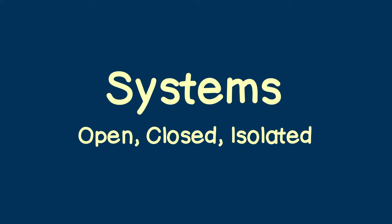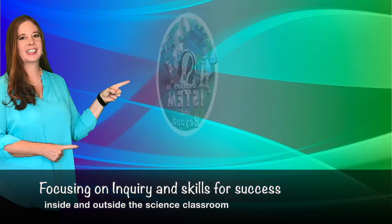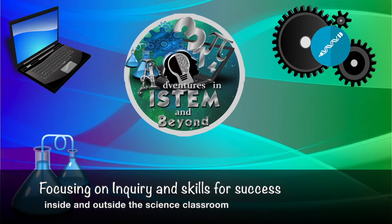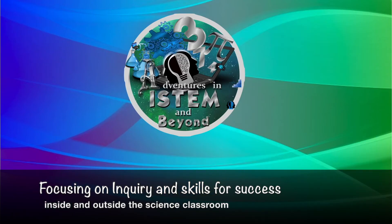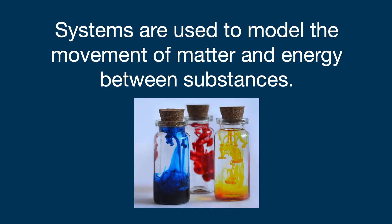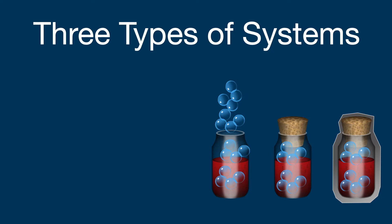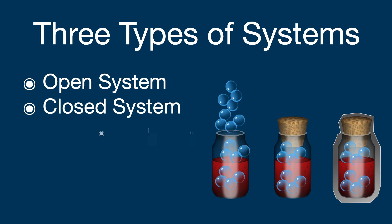Systems. Open, closed, isolated. Systems are used to model the movement of matter and energy between substances. There are three types of systems. Open system, closed system, and isolated system.